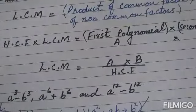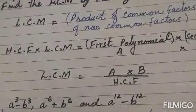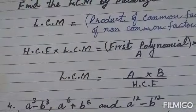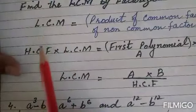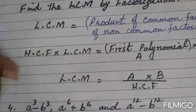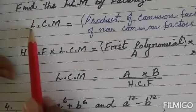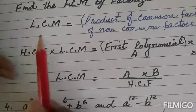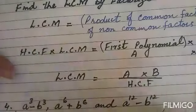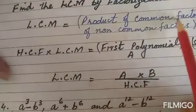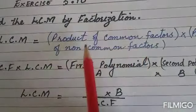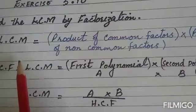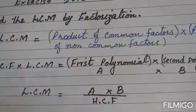First of all, you need to know what LCM is. If a polynomial is completely divided by a second polynomial, we say that it is a common factor of the second polynomial. If there are many common multiples, the one with the least degree is called the LCM — least common multiples. By the factorization method, LCM equals the product of common factors multiplied by the product of non-common factors.